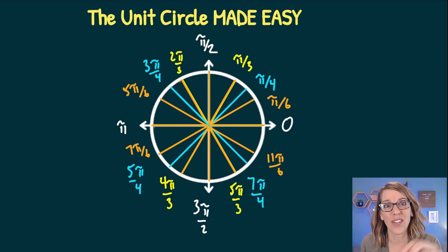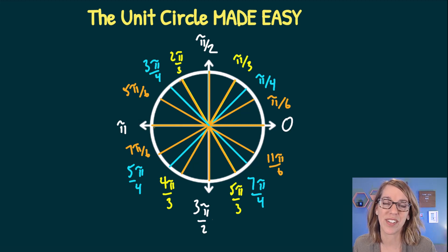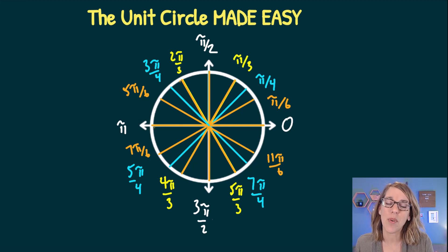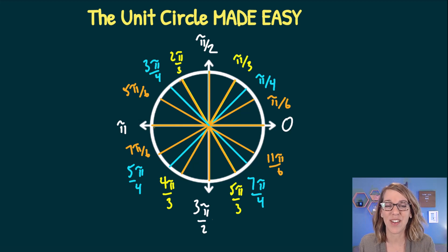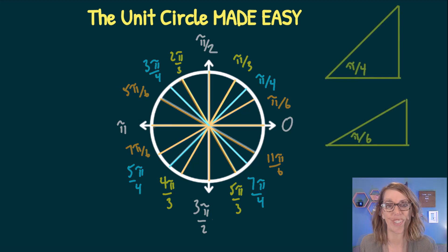This gives us all of the common radian angles as we move around one full rotation of the unit circle. Next we're going to label the points on the unit circle that correspond to each of these angles — I'll show you a really easy way to do that.